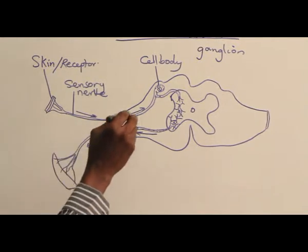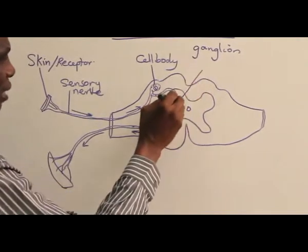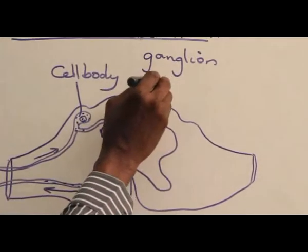Now, the space between the dendrites is called synapse.